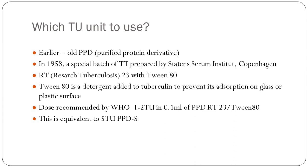Earlier we used PPD-S, then started adding Tween-80 as a detergent. Now WHO recommends 1 to 2 TU PPD RT23, equivalent to 5 TU. Quite a few labs in Mumbai still use PPD-S at 10 TU — so when a patient comes with a Mantoux report positive, you have to check which PPD was used. If it's 10 TU, you have to ignore that report. Only if it is 1 to 2 TU RT23 or 5 TU PPD-S should you take the report as positive. Mantoux reading should be done after 48 hours, but you can read up to 7 days. You take the horizontal reading only — vertical is the lymphatics — and it has to be induration, not erythema, more than 10 mm.